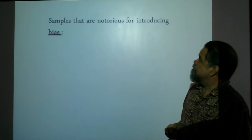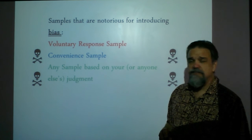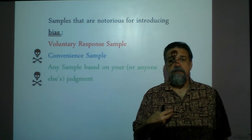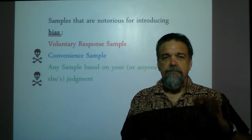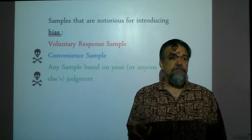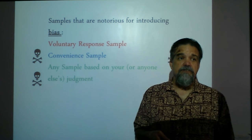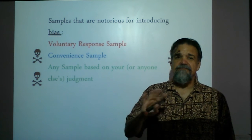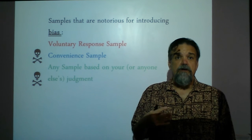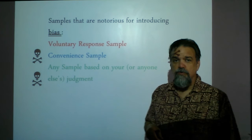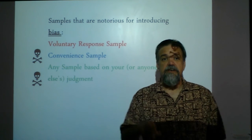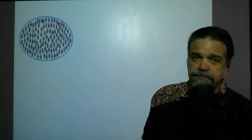Some sampling methods are notorious for introducing bias. A voluntary response sample — where people call in — produces voluntary response bias because participants choose whether to respond, making it non-random. A convenience sample, like approaching people at a mall and asking those who smile back, is also biased because it's not randomized and skews toward friendly people. Any sample based on your judgment or anyone else's judgment should not be used — it needs to be based on randomness.